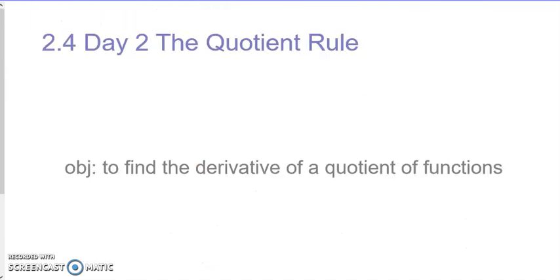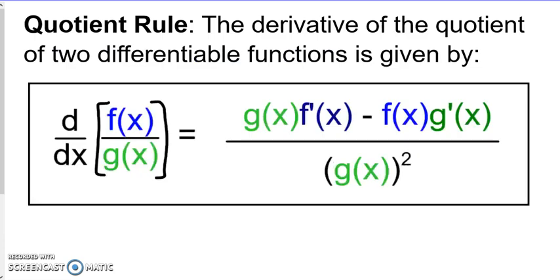All right, so now we're going to talk about the quotient rule. So the formal definition: the quotient rule — the derivative of the quotient of two differentiable functions is given by this.